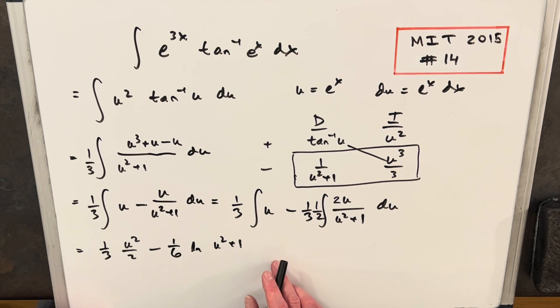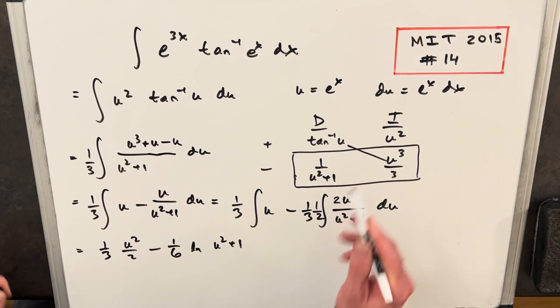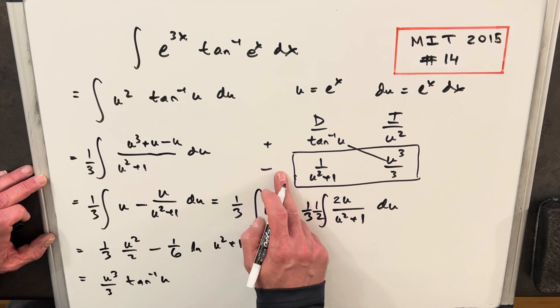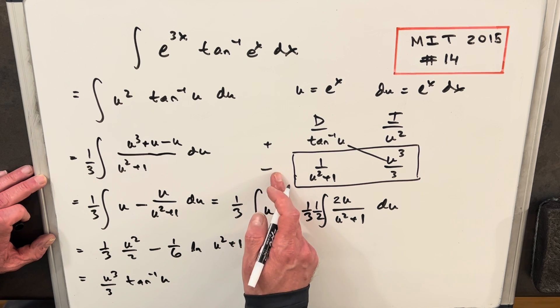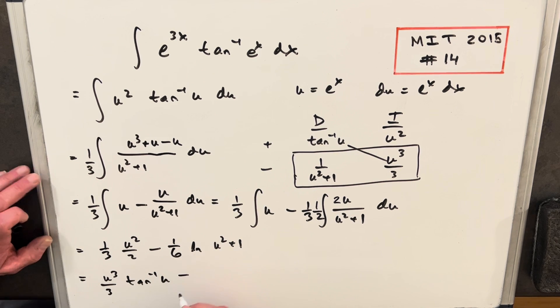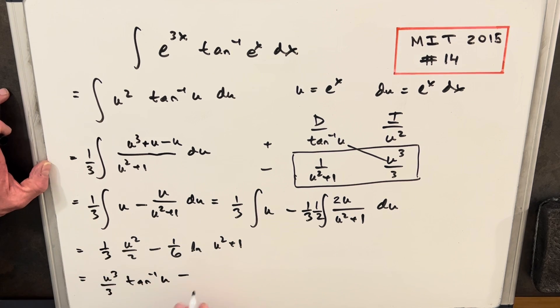So now I think we have everything in u. Let's just write it out so we can see it all together. So let's include this part. So we're going to have u cubed over 3 tan inverse u. Then we don't want to forget this minus sign, so I'm just going to kind of on the fly distribute this minus in here. 1 third times a half is a 6, so we're going to have u squared over 6.